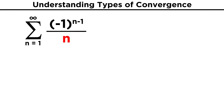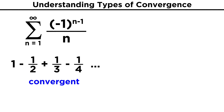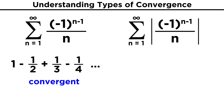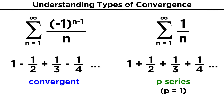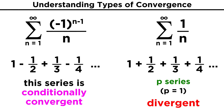On the other hand, let's modify this slightly and take away the exponent in the denominator, leaving simply n. That will give us a different alternating series, which we know is also convergent. However, when we take the absolute value of this series, which turns all the terms positive, we get another p series, but this time with a p value of one. Any p series with a p value of one or less will be divergent, and so we say that the original series is conditionally convergent. This is different from being absolutely convergent, because taking its absolute value produces a series that is divergent.